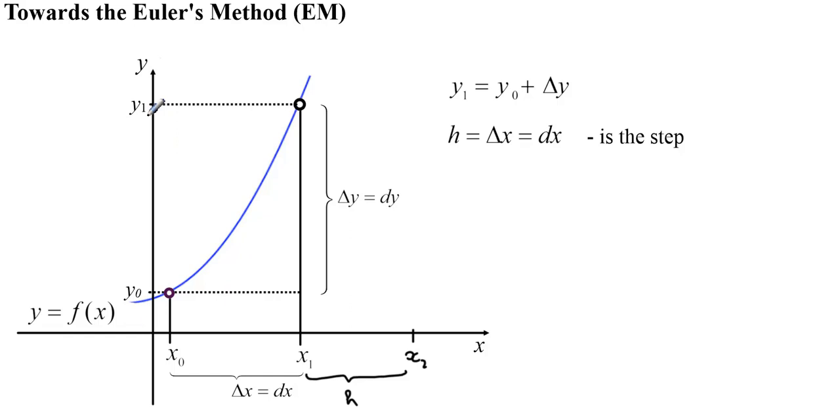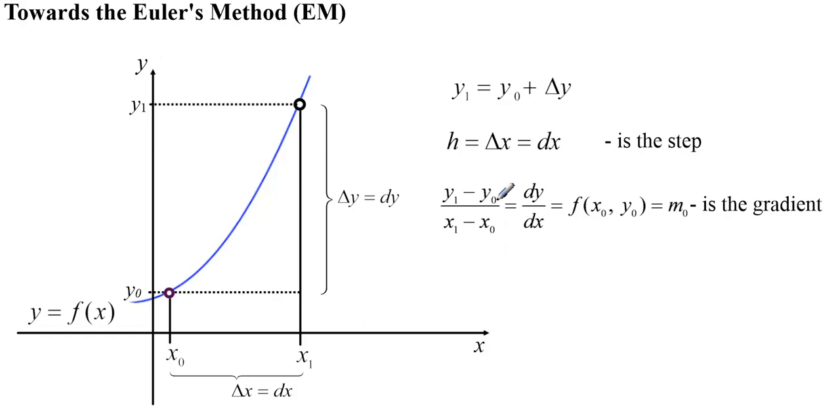Now our question is, how to determine this y1? We know that if we take (y1 - y0)/(x1 - x0), we can actually get the value of the derivative dy/dx at point (x0, y0). That value of the derivative represents the gradient of the graph at that point, which is the instantaneous rate of change.